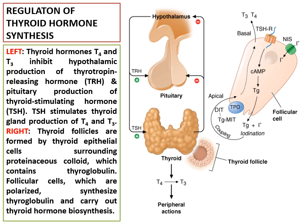Increased thyroid hormone in the body inhibits secretion of TSH by the anterior pituitary. When the rate of thyroid hormone secretion rises to about 1.75 times normal, the rate of TSH secretion falls essentially to zero.